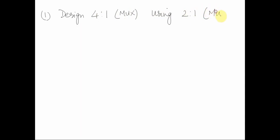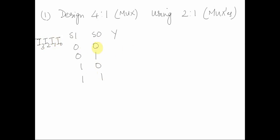Now let's move on to one more example: design a 4-to-1 MUX using 2-to-1 MUXes. A 4-to-1 MUX has 2 select lines and an output Y. The select combinations are 00, 01, 10, 11, and we have inputs I0, I1, I2, I3. When select is 00 output is I0, and so on for I1, I2, I3. If we divide this truth table into two blocks: when S1=0, I0 or I1 go through; when S1=1, I2 and I3 pass through.